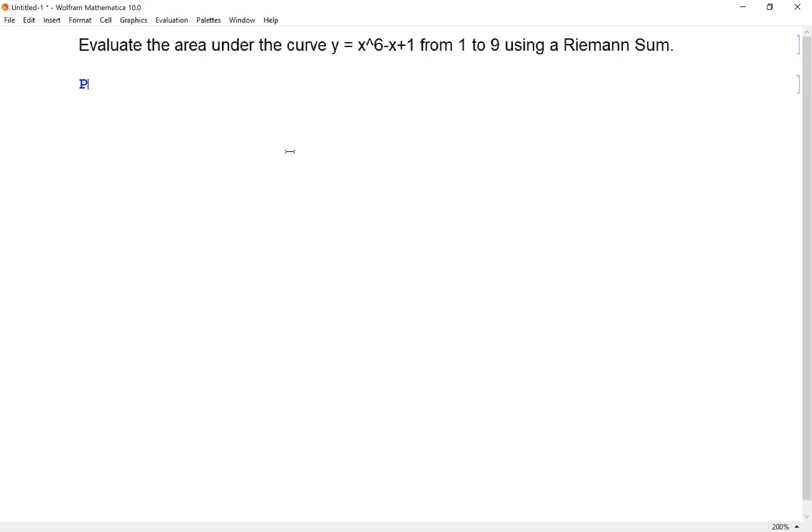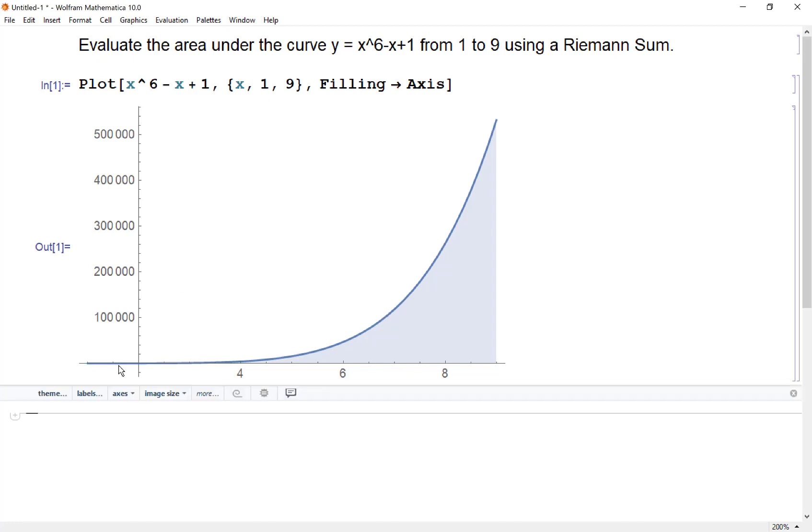So first, let's just plot this to see what we're looking at here. So if I have x to the sixth minus x plus one, x going from one to nine, and let's do a filling to the axis just so we can see the actual area. We want this blue region and it's going to be pretty large because you can see over here around eight or so, we're up around 300,000. So it's going to be a big area, but that's okay.